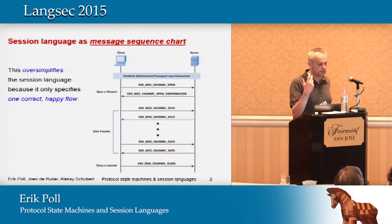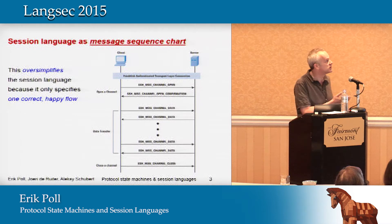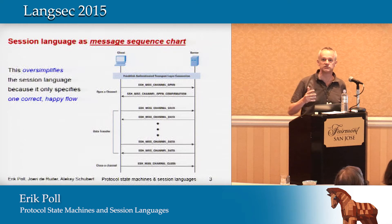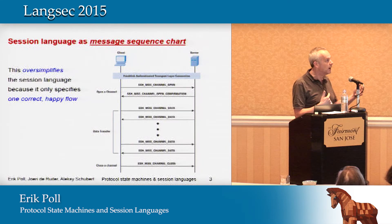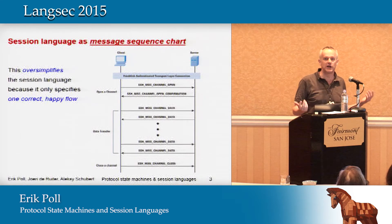As an indication of the formalisms people use for session languages: typically we notice them in specifications as message sequence charts, which describe a happy flow of a complete session. This is a useful specification, but typically a very incomplete one, because you're only giving one example of one correct happy flow and not saying what happens if something else occurs.